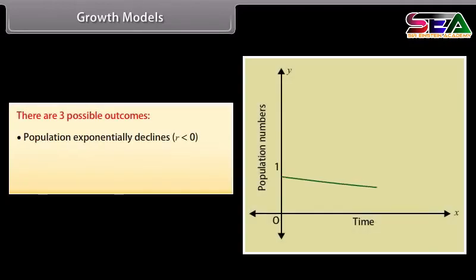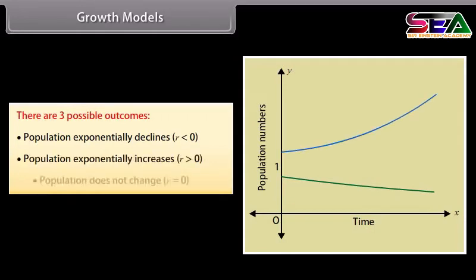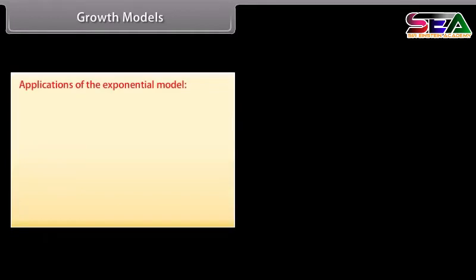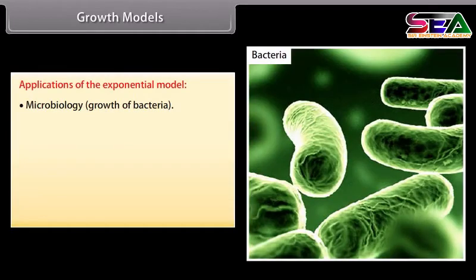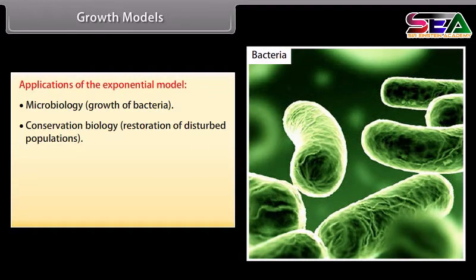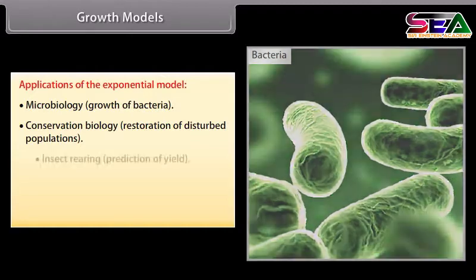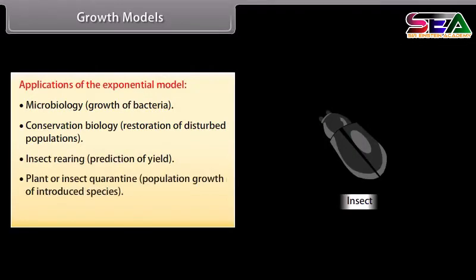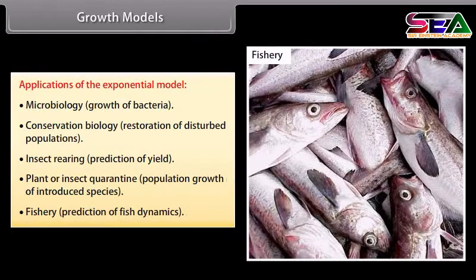There are three possible outcomes of the exponential model: population exponentially declines, population exponentially increases, or population does not change. Applications of the exponential model include microbiology (growth of bacteria), conservation biology, restoration of disturbed populations, insect rearing, prediction of yield, plant or insect quarantine, population growth of introduced species, and fishery prediction of fish dynamics.